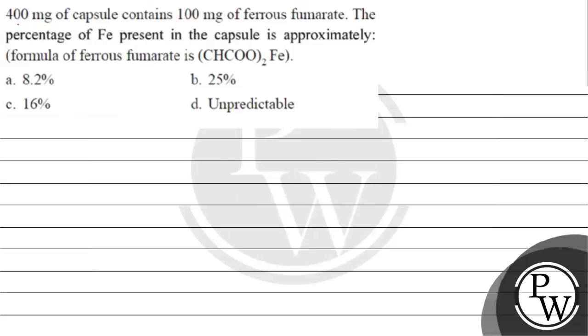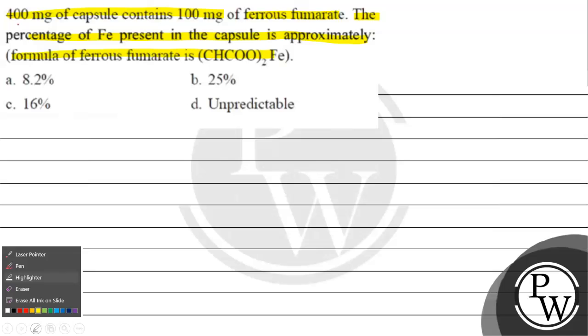Hello, let's read this question. The question says 400 milligrams of capsule contains 100 milligrams of ferrous fumarate. The percentage of iron present in the capsule is approximately. Humare paas formula diya hua hai ferrous fumarate ka. Option A hai 8.2 percent, option B hai 25 percent, option C hai 16 percent, option D hai unpredictable.